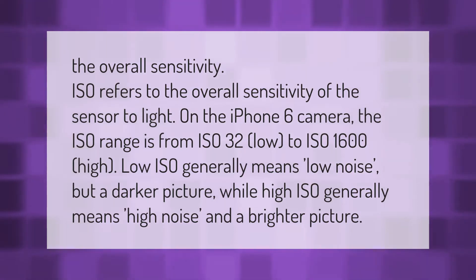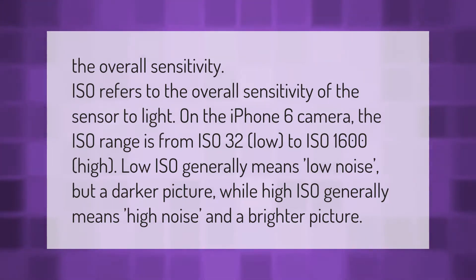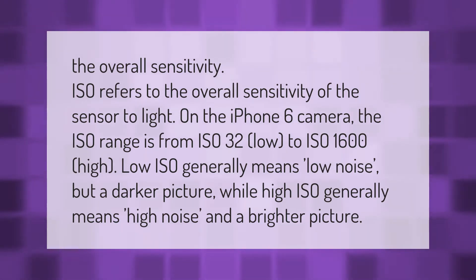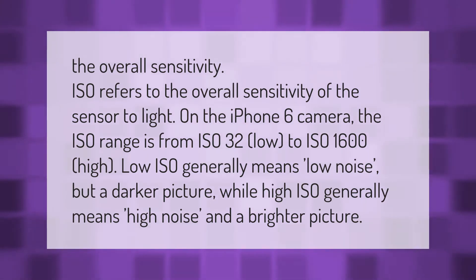ISO refers to the overall sensitivity of the sensor to light. On the iPhone 6 camera, the ISO range is from ISO 32 (low) to ISO 1600 (high). Low ISO generally means low noise but a darker picture, while high ISO generally means high noise and a brighter picture.